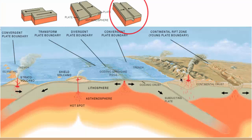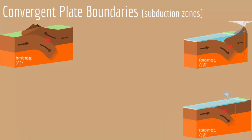The other type of boundary is convergent plate boundaries. Unlike divergent boundaries where plates move apart, in convergent boundaries two plates go head-to-head in opposite directions and collide. Convergent plate boundaries are also called subduction zones because when two plates collide, one is subducted underneath the other. We have three types: two continental crusts colliding, an oceanic crust and a continental crust colliding, or two oceanic crusts colliding.